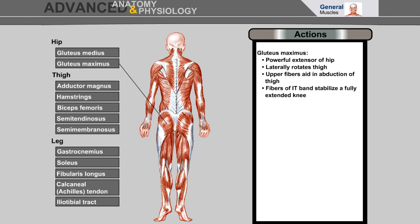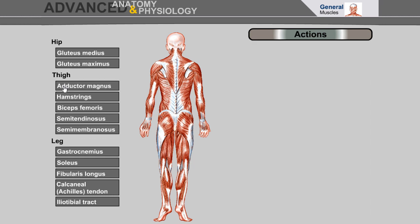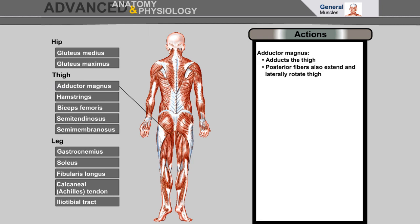Gluteus maximus: powerful extensor of the hip, laterally rotates the thigh; upper fibers aid in abduction of the thigh; fibers of the IT band stabilize a fully extended knee. Adductor magnus adducts the thigh; posterior fibers also extend and laterally rotate the thigh.